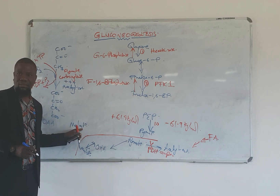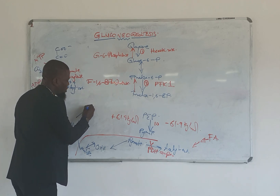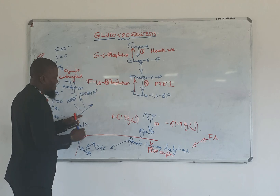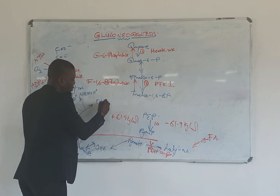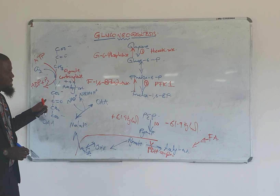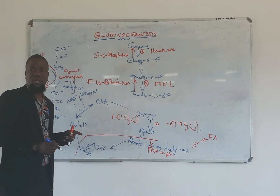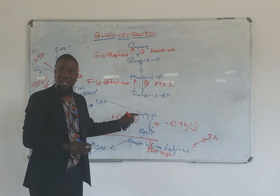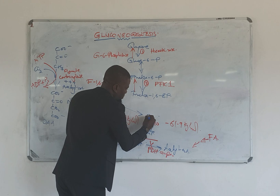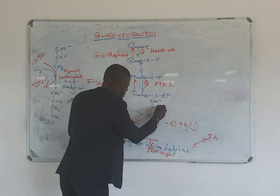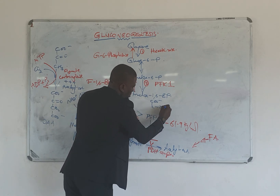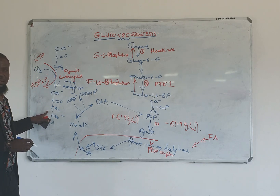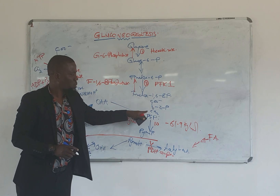The inner mitochondrial membrane is highly impermeable and can't allow oxaloacetate to cross. So malate moves out of the mitochondria and gets into the cytosol as cytosolic malate. This cytosolic malate is then oxidized back with the help of malate dehydrogenase to produce oxaloacetate again in the cytosol.